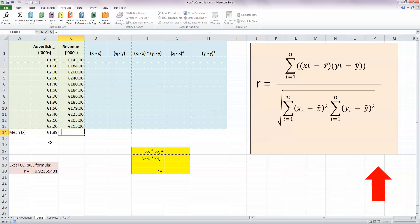My mean for the revenue is quite simply equals average, opening bracket, select all my data for revenue, closing bracket, and press enter. So my mean value here is 194. So now I've got already the values for the mean of X and the mean of Y where they appear in my formula.